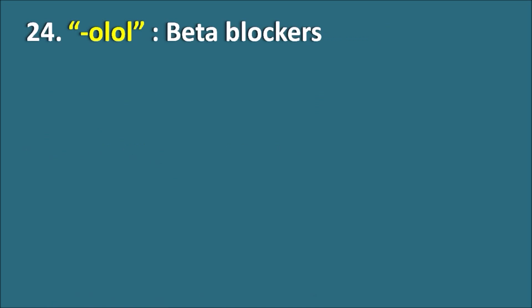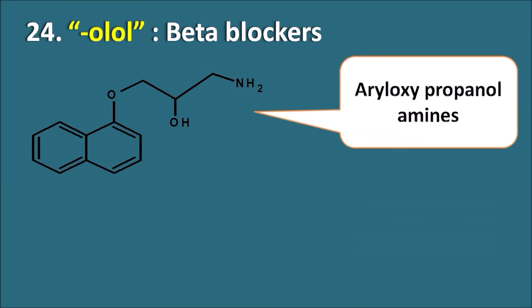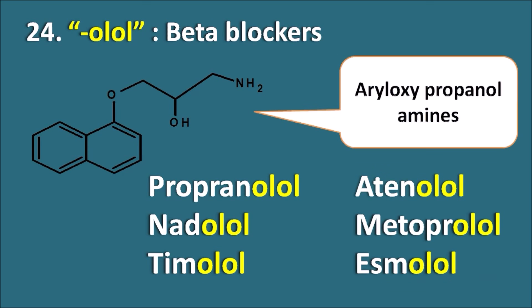Twenty-fourth, the suffix '-olol' indicates they are beta blockers. Beta blockers share a common structure — aryloxypropanolamine. Drugs like Propranolol, Nadolol, and Timolol are the non-selective beta blockers, whereas drugs like Atenolol, Metoprolol, and Esmolol are the selective beta blockers. Whether selective or non-selective, all share the same suffix '-olol', indicating they are beta blockers.